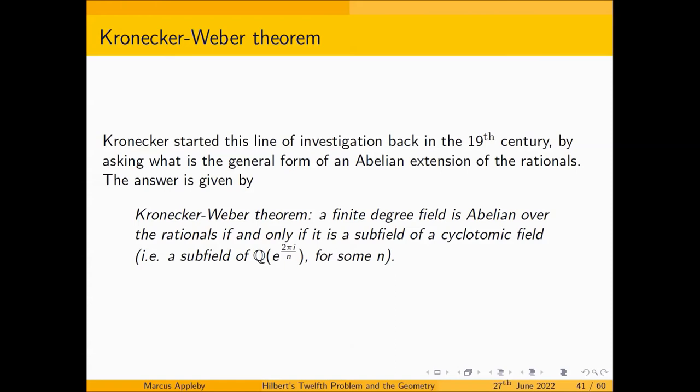Kronecker started this line of investigation in the 19th century by asking: what's the general form of an abelian extension of the rationals? The answer is the Kronecker-Weber theorem — so-called because he stated an inadequate version around 1850-1860, and the final proof came 30 or 40 years later. What it says is remarkable: a finite-degree field is abelian over the rationals if and only if it's a subfield of a field generated by a root of unity. These are called cyclotomic fields, and they play a very central role for abelian extensions of rationals.